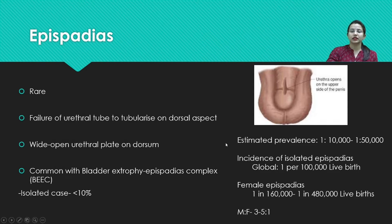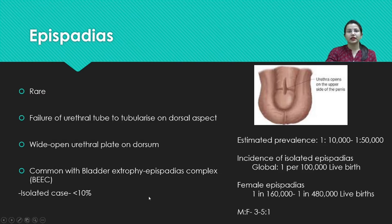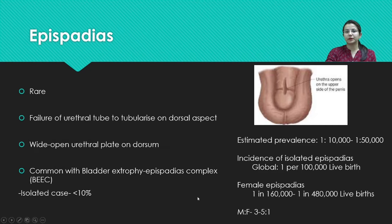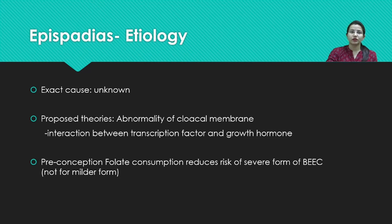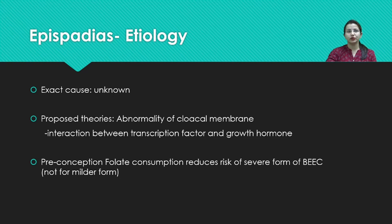Epispadias is a very rare entity with a global incidence of one per one million live births. It is more common in association with the bladder exstrophy-epispadias complex, and only 10 percent of cases are isolated epispadias. The incidence of female epispadias is far less. The exact cause is not known; the proposed theory involves abnormality of the cloacal membrane and abnormal interaction between transcription factors and various growth factors.